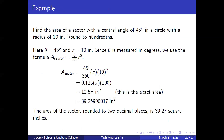Find the area of a sector with a central angle of 45 degrees in a circle with a radius of 10 inches. Round to hundredths. Here theta equals 45 degrees and r equals 10 inches. Since theta is measured in degrees, we use the formula: area of sector equals theta over 360 times pi r squared. So the area is 45 over 360 times pi times 10 squared, which is 0.125 times pi times 100, which is 12.5 pi square inches. That's the exact area, and rounded to two decimal places it is 39.27 square inches.